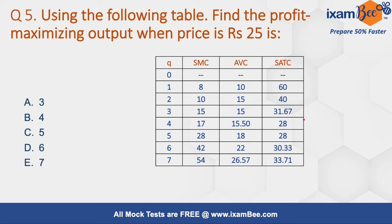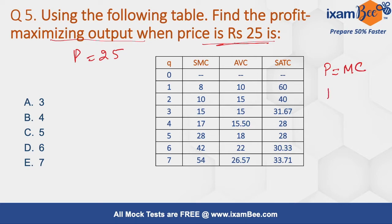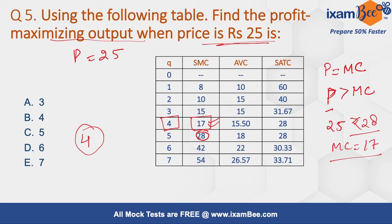Let's see question number five — using the following table, find the profit maximizing output when the price is 25. For maximizing profit, the price should equal the marginal cost, or at least price should be greater than or equal to marginal cost. Here the price is 25. Looking at the short-run marginal cost values, 28 is greater than 25 so we go to the marginal cost of 17. Corresponding to MC of 17, the output is 4 units — so at price 25, the producer should produce 4 units.